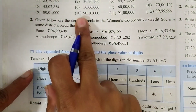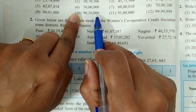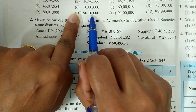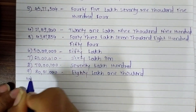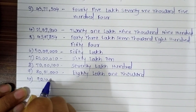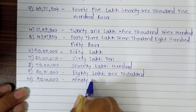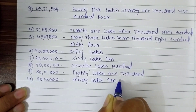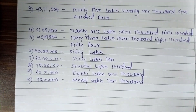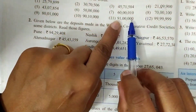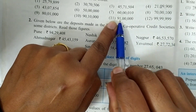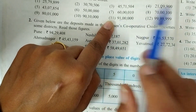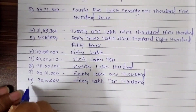Look at the 10th question. Count: units, tens, hundreds, thousands, ten-thousands, lakh, and ten-lakh. It's 90,00,000 — ninety lakh. Write it in your notebook. The next question — count the same places — it's ninety-one lakh only. Write it in your notebook.